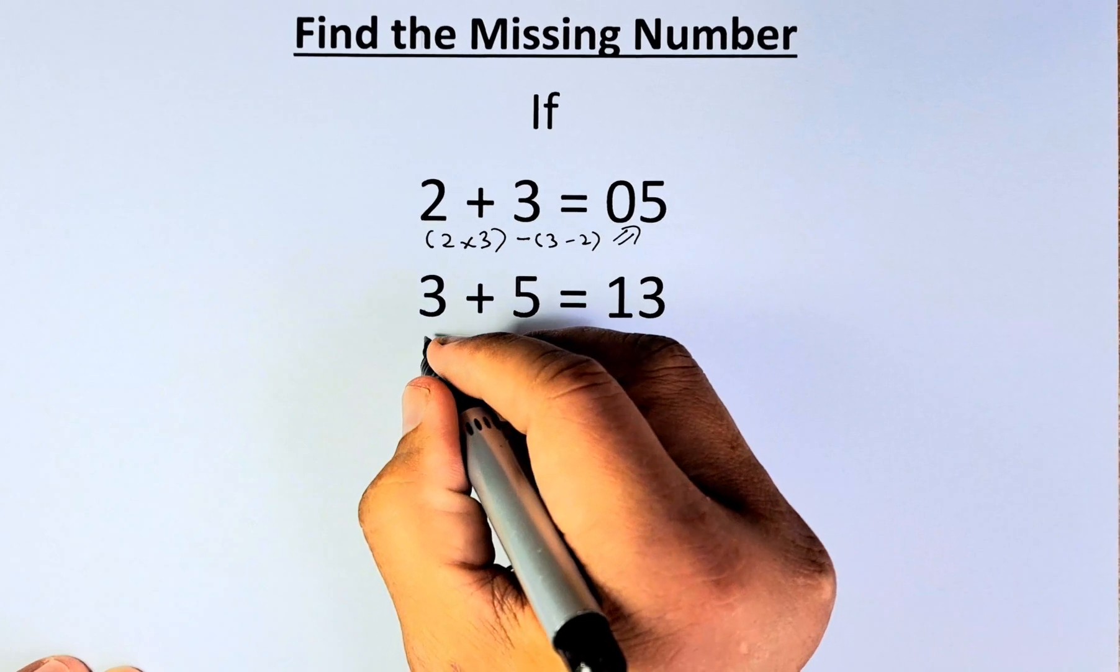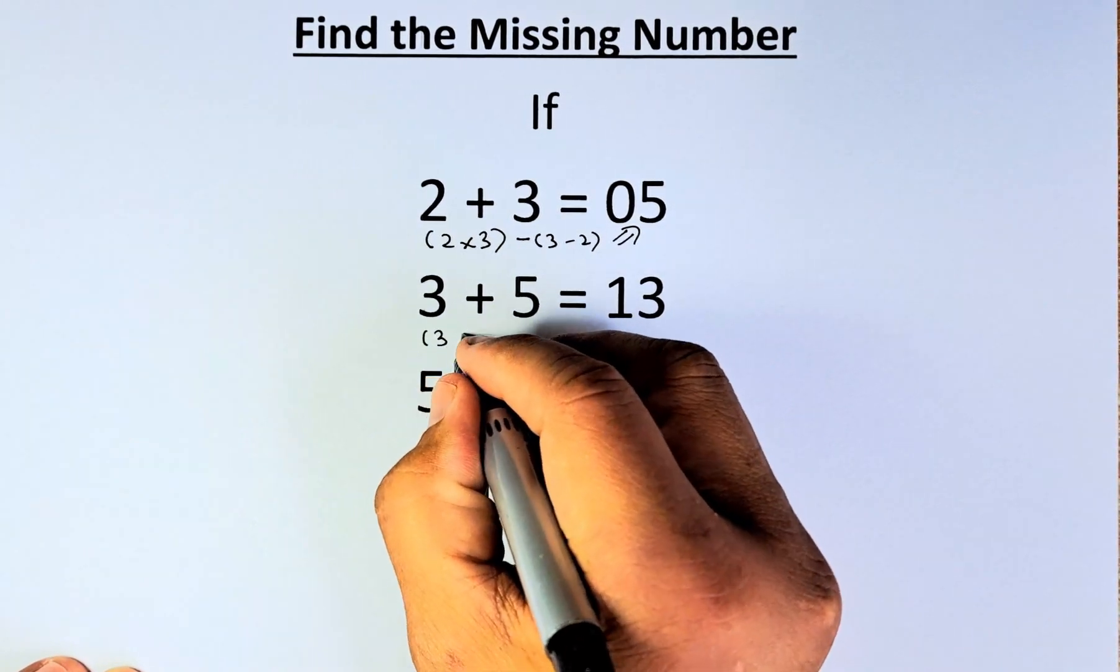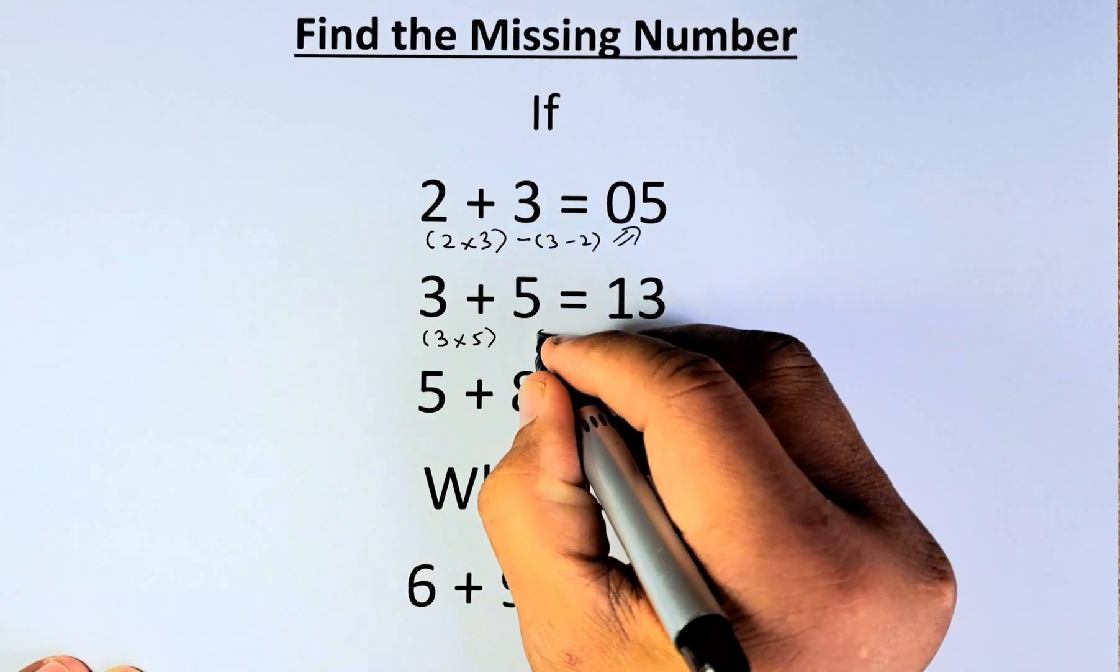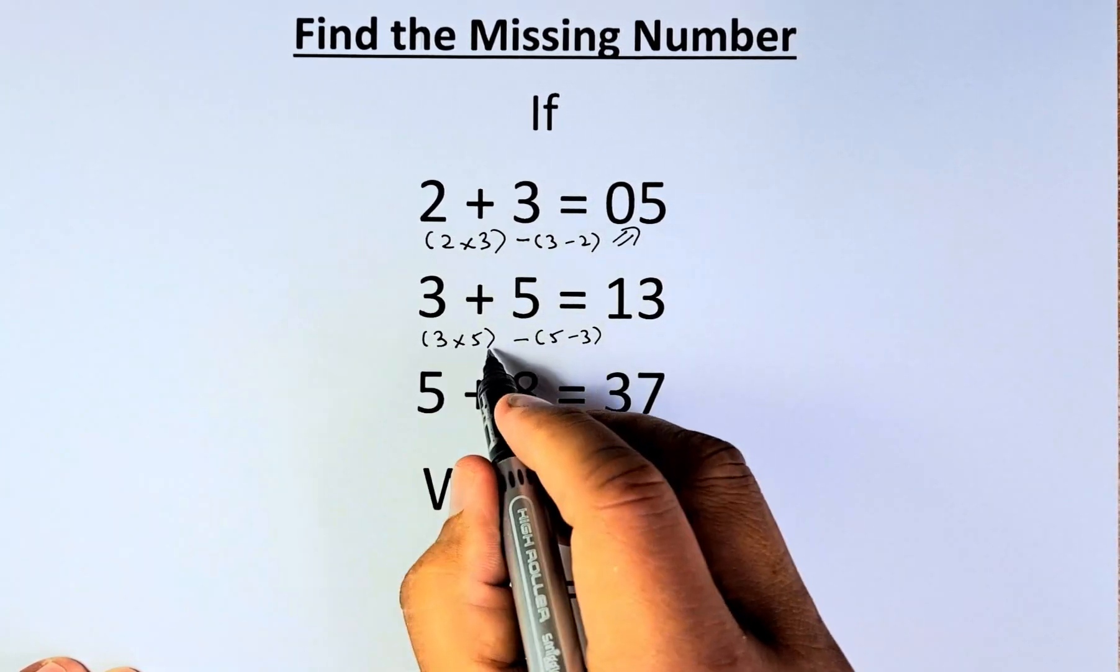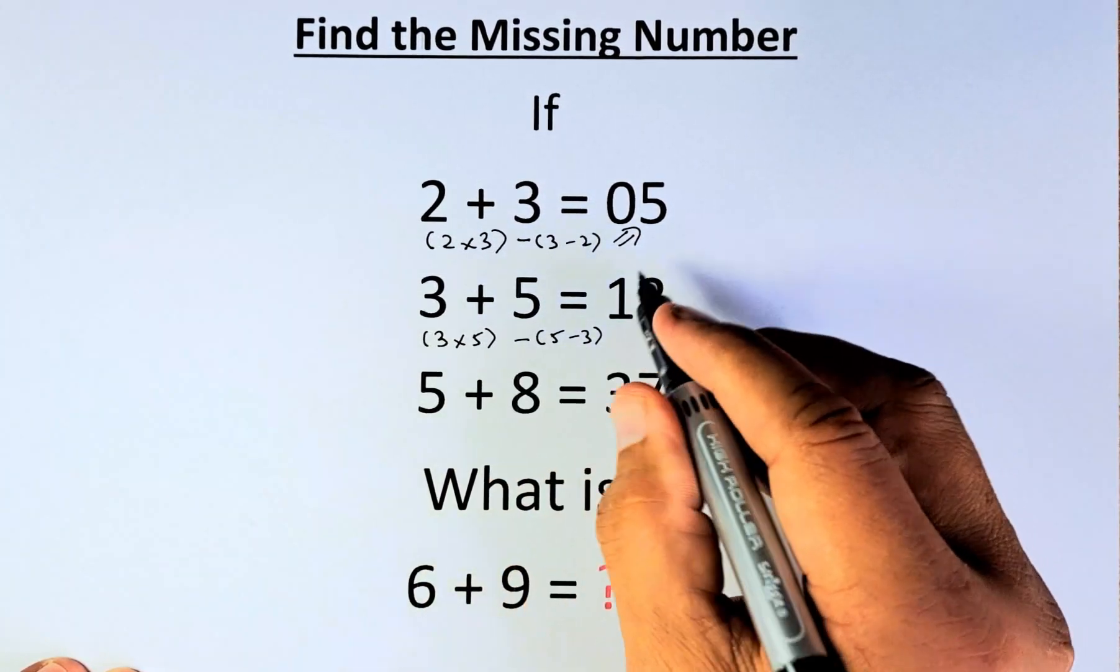we are going to multiply the two numbers together, 3 multiplied by 5, and then take 5 minus 3, so you're going to minus that. So 15 minus 2 will give you 13.